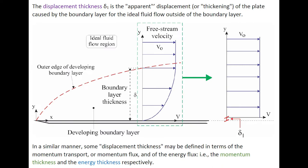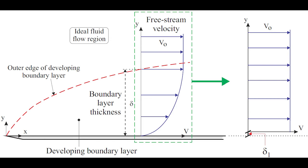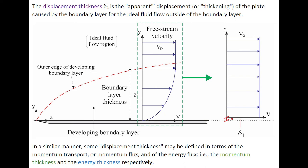The displacement thickness is the apparent displacement or thickening of the plate caused by the boundary layer for an ideal fluid flow outside of the boundary layer, as sketched below. In a similar manner, displacement thicknesses may be defined in terms of momentum flux and energy flux: the momentum thickness and energy thickness.